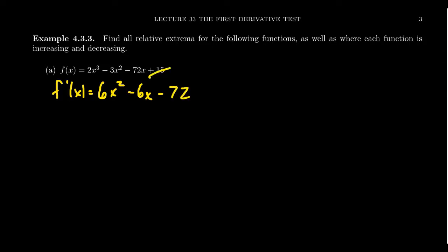The derivative of a constant goes to zero, so it'll just disappear. This derivative itself is a polynomial, so it won't be undefined anywhere. We just need to figure out when the first derivative equals zero to find the critical numbers. We have this quadratic equation to solve. We're going to do this by factoring if possible; if not, we could use the quadratic formula.